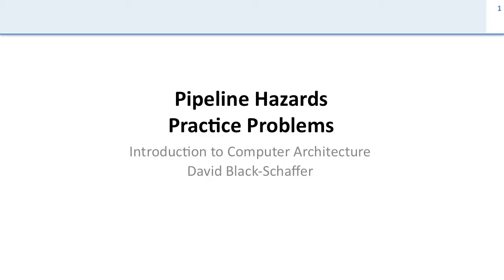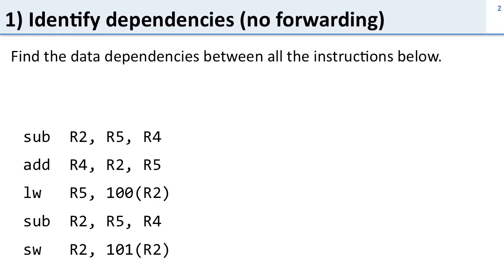Let's go through the pipeline hazard practice problems. The first question is to identify the dependencies — not paying attention to forwarding here, just figure out what are the dependencies between all the instructions below.